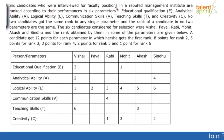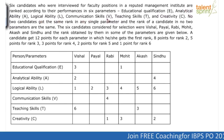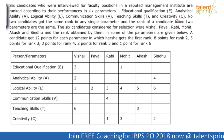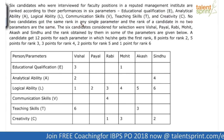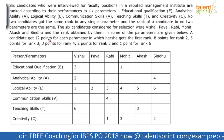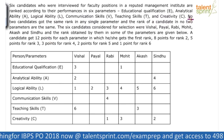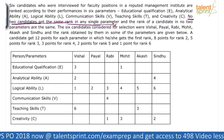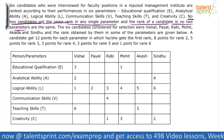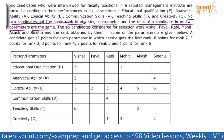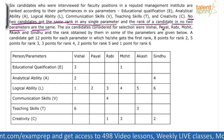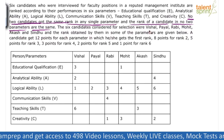Six candidates who were interviewed for faculty positions in a reputed management institute are ranked according to their performances in six parameters: educational qualification, analytical ability, logical ability, communication skills, teaching skills, and creativity. There are six parameters on which six candidates are ranked. The six candidates considered for selection were Vishal, Payal, Rabi, Mohit, Akash, and Sindhu, and the ranks obtained by them in some of the parameters are given in a table.